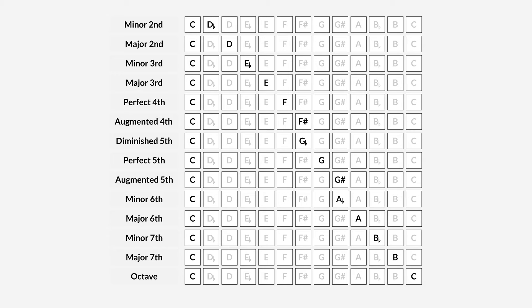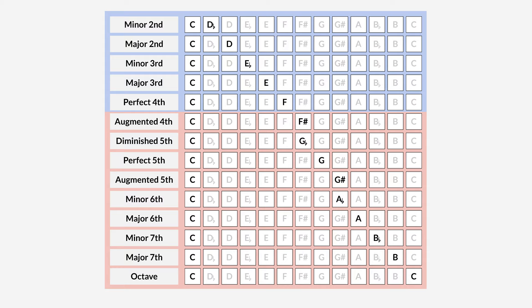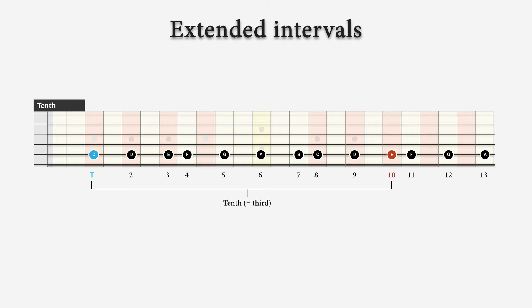So, if we look at this interval overview, we can say that all intervals up to the fourth are closed intervals and everything from the augmented fourth to the octave are wide intervals. And there are even wider intervals that span more than an octave. And these are the ninth, the tenth, the eleventh, the twelfth, and the thirteenth, for instance. And we call them extended intervals.